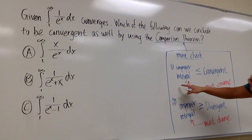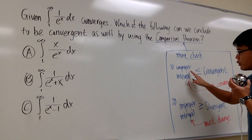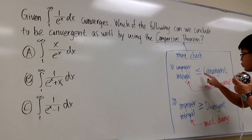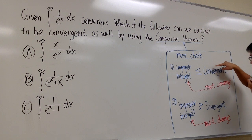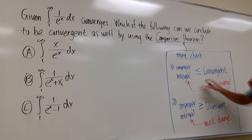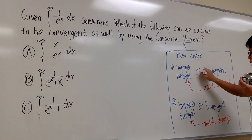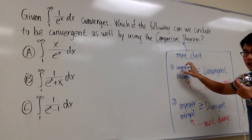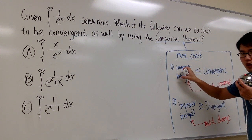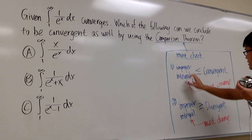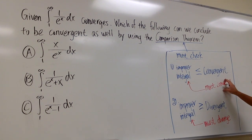The first situation is: if we have an improper integral and we can show that it is less than or equal to a convergent integral we already know — remember, convergent means we have a finite area — if we have something smaller than a finite area, that means this integral has to be finite as well. It's smaller than the finite, and that implies it has to converge.